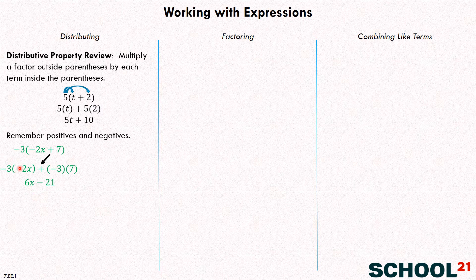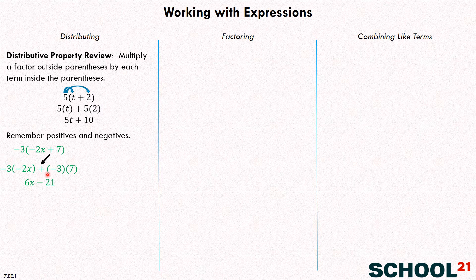You can see this gets a little complicated with negatives and positives, but the key thing is to remember that arrow. Whatever is the addition or subtraction inside the parentheses, you have to make sure to carry that forward and pay attention to it. Let's pretend this problem was slightly different — negative three times the quantity negative two X minus seven instead of plus seven.